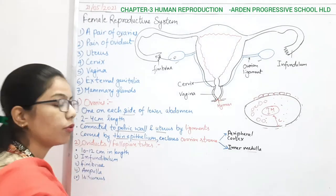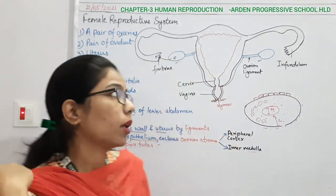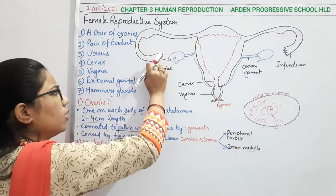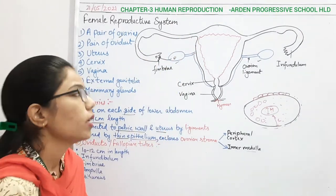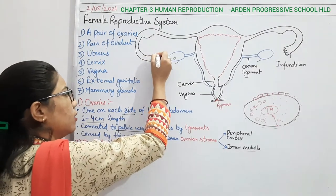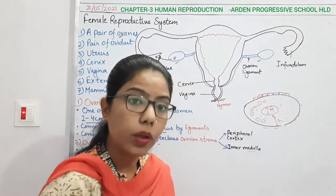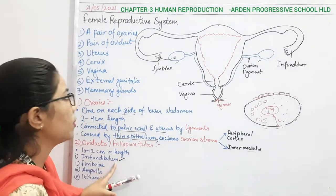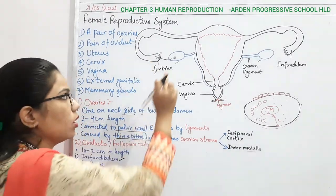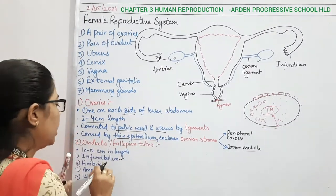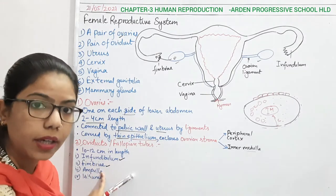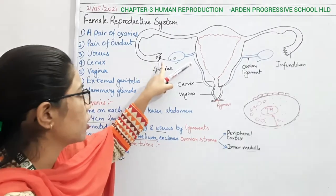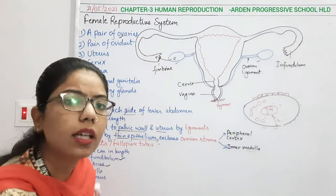The second part we are studying is the oviduct or fallopian tube, which plays a very important role and has different parts. The part which is in a conical shape near the ovary is called the infundibulum. Another part of this fallopian tube is the fimbriae — these are the projections present in the infundibulum, this conical structure.